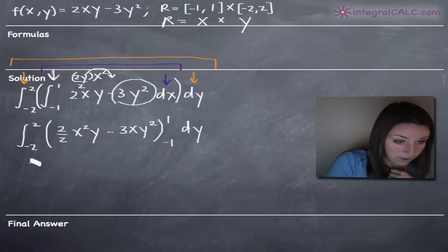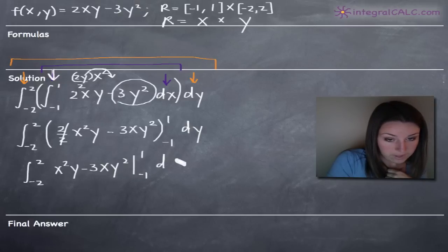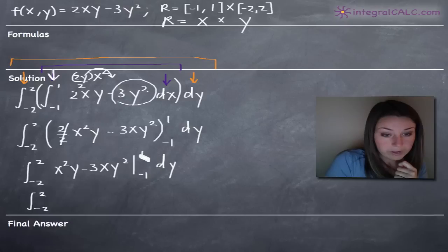Before we evaluate on this range, let's simplify. Obviously, 2 over 2 cancels, so we've just got x squared y minus 3xy squared on the range negative 1 to 1, and then dy out here. Now evaluating, we've got negative 2 to 2.